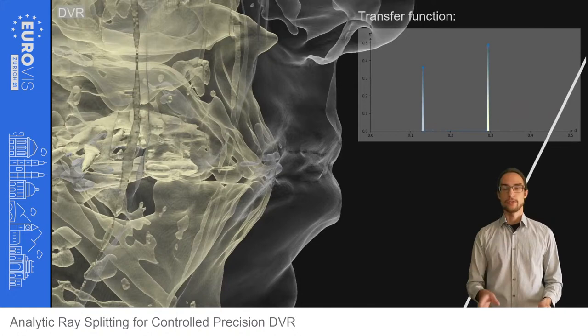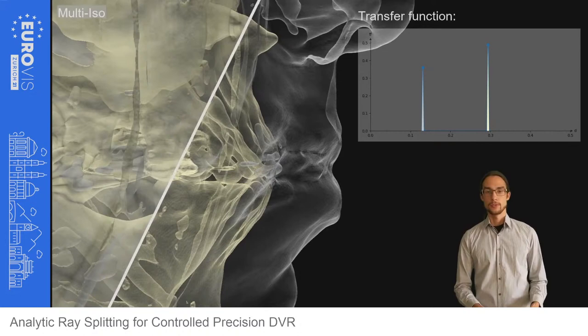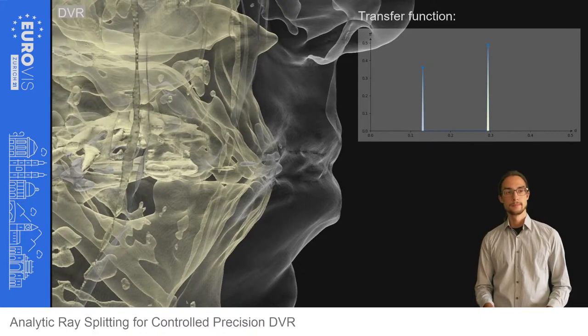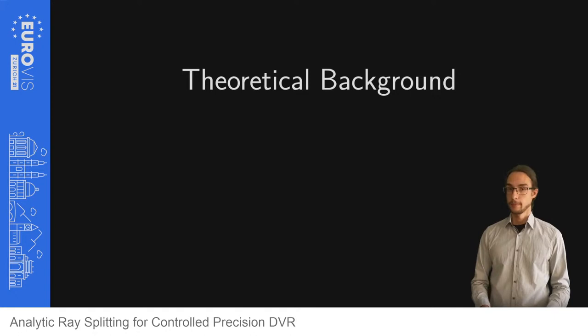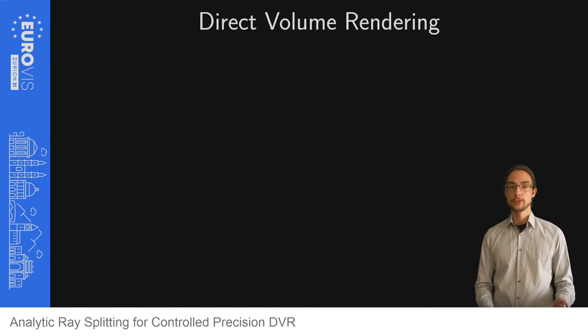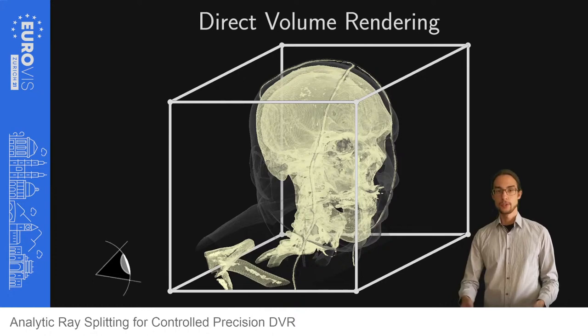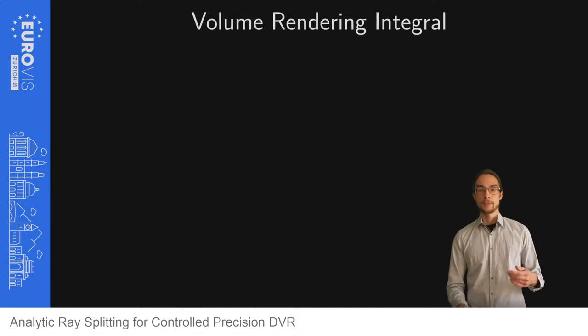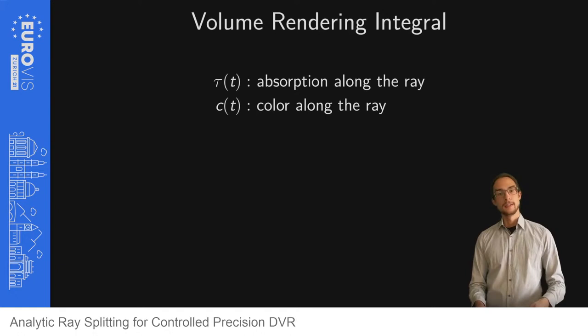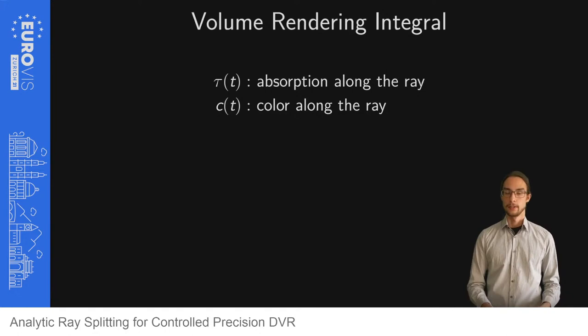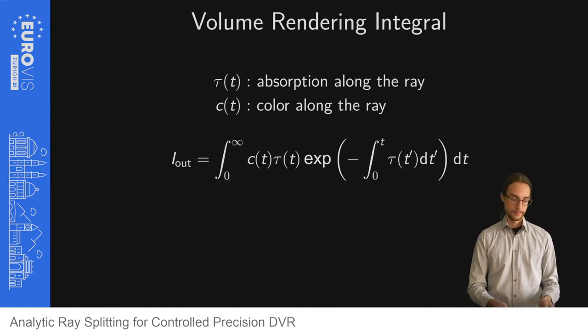However, smooth transfer functions lead to a loss of small details, so a sharper, more narrow transfer function is needed instead. Here is again a comparison between multiple isosurfaces and direct volume rendering. Before we explain our method we introduce a bit of theoretical background. In direct volume rendering, the task is to visualize 3D volumes. We start by shooting a ray from the camera through the object and accumulating the colors along that ray. The mathematical model behind this is the so-called volume rendering integral.